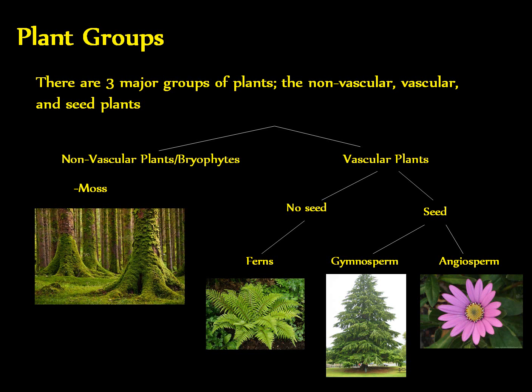In the angiosperms, the flowering plants, they have their seeds protected by some sort of fruit structure that develops from their ovary when it gets fertilized.